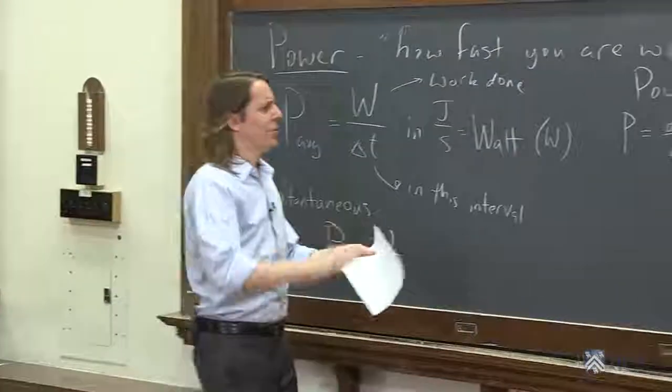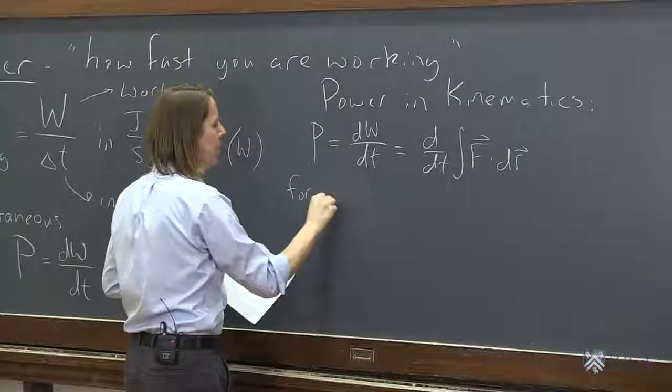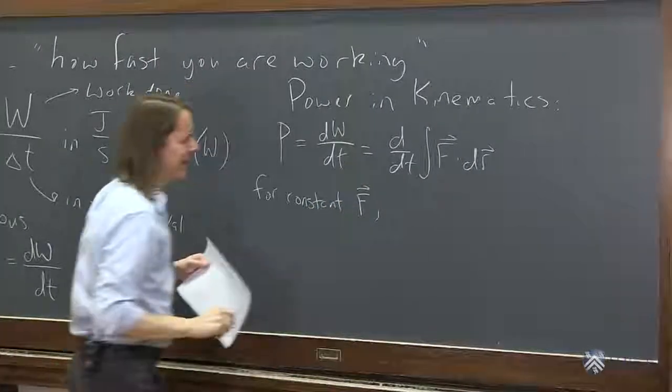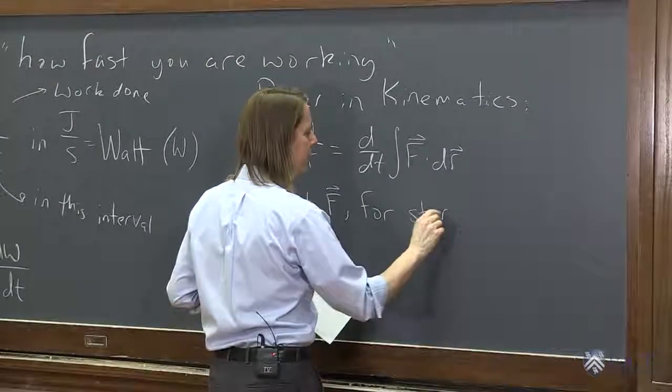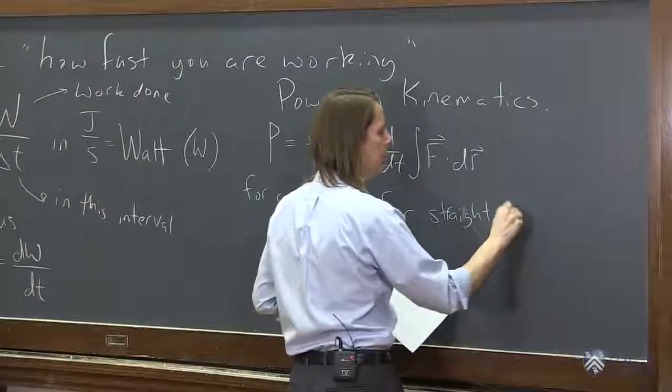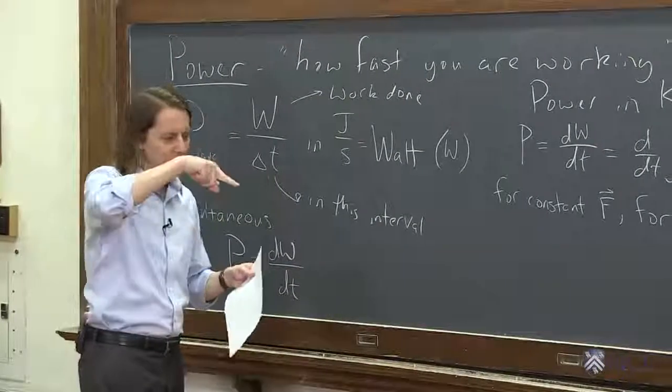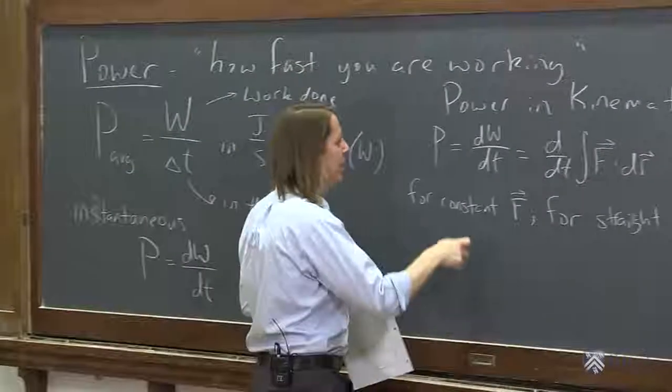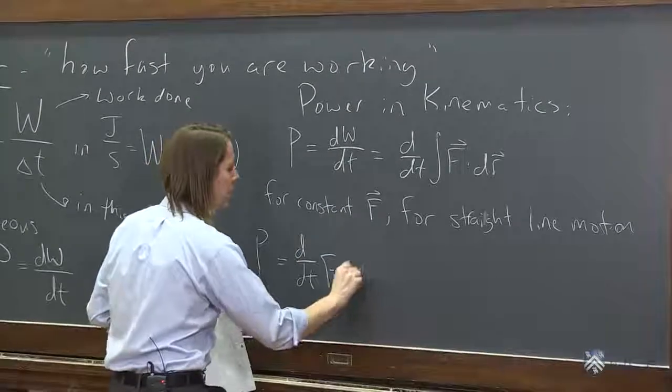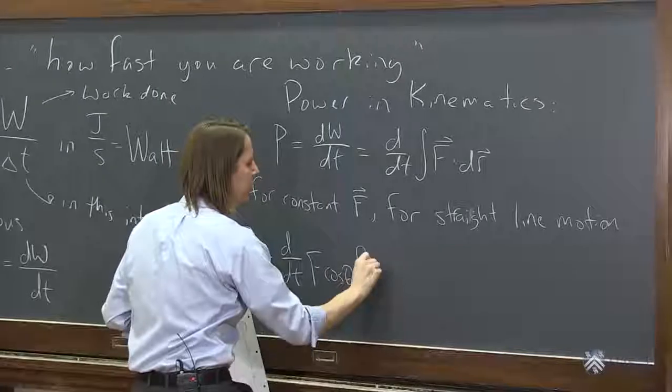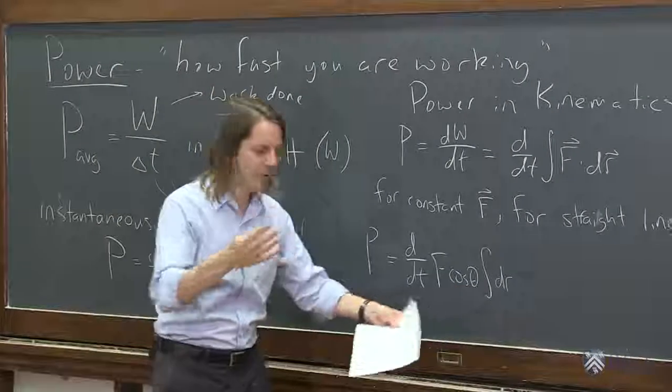So if you had some varying work and some varying curve, you could figure that all out from this. But there's a simpler version I want to get to for constant force and for straight line motion, because that would cover a lot of simple kinematics situations. Then what you would have is that the dot product would be sort of a constant. So if the force is always the same direction and the motion is the same direction, they would go together. So we could write this P then as d/dt of the force magnitude, cosine theta is between them, and then you're just left with the integral of dr, the magnitude dr. But then that's just the distance. That's just what you would call d, or r, or just how far it went.